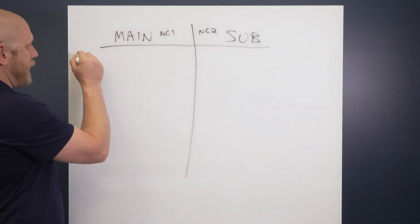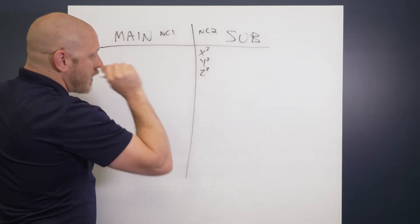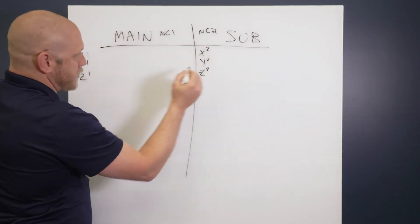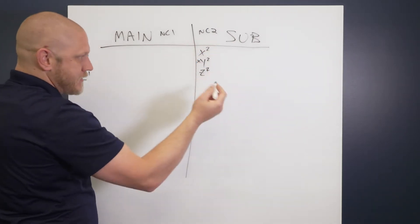Typically, main is going to be XYZ1 and sub is going to be XYZ2. For example, some machines might not have a Y axis on the sub, so maybe this is omitted. Maybe it's just X and Z2.